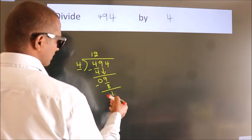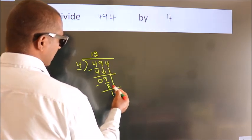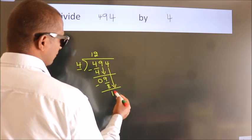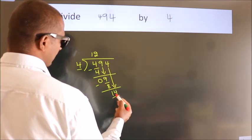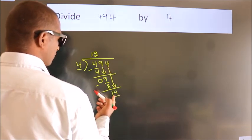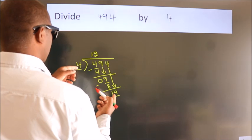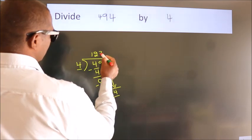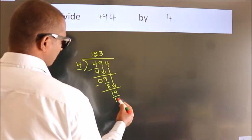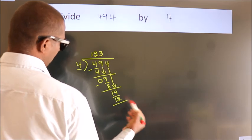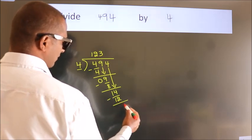After this, bring down the beside number. So 4 down. So 14. A number close to 14 in the 4 table is 4 threes, 12. Now we subtract. We get 2.